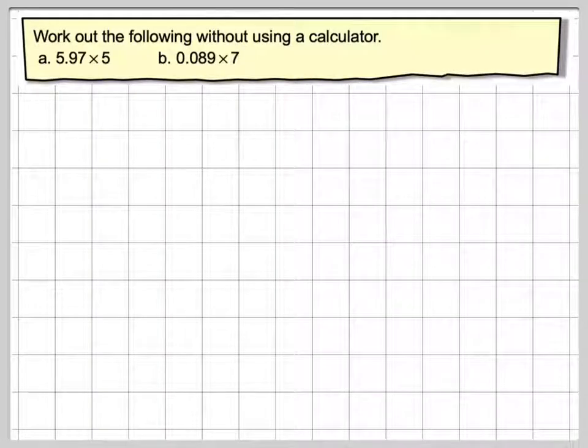Hi, in this video we're going to look at multiplying a decimal by a whole number. Let's work out the following without using a calculator: 5.97 times 5 and 0.089 times 7.